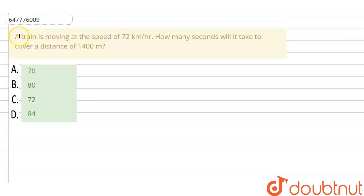Hello guys, so the question is: a train is moving at the speed of 72 km per hour. How many seconds will it take to cover a distance of 1400 meter?